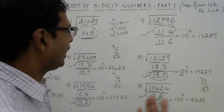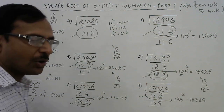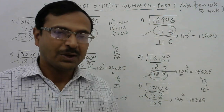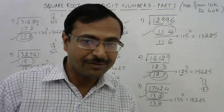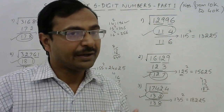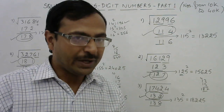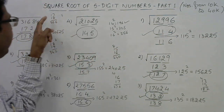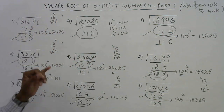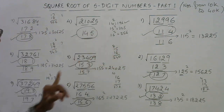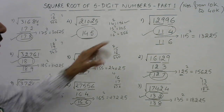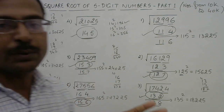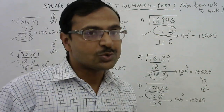Friends, just watch how this trick is working for all numbers up to 40,000. Beyond 40,000, you need to be aware of the squares of numbers from 21 onwards. Here I have taken the squares of numbers up to 19. So if you go beyond 40,000, then the squares of numbers from 20, 21, 22, up to 29 are required to solve for those numbers.